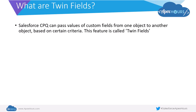On the quote line, you have the internet subscription service, but you've also captured the service address on the quote line. When you convert this particular quote and it becomes a subscription, you want that service address to be copied over to the subscription record as well. Typically, you would use a formula field or a process builder to update this. However, with twin fields, that is not required.